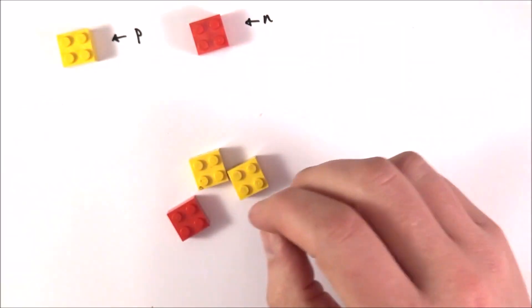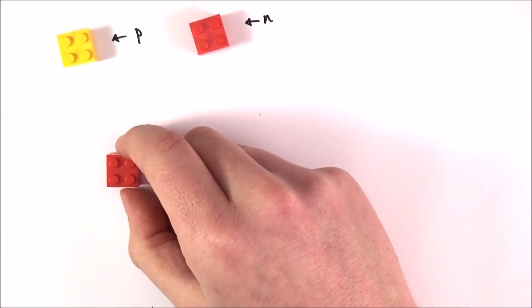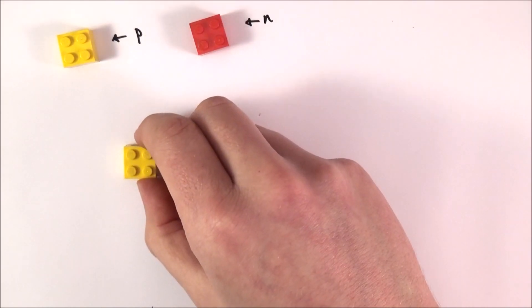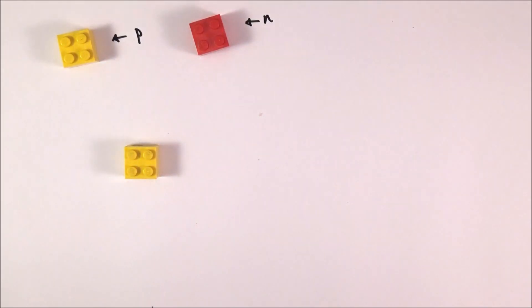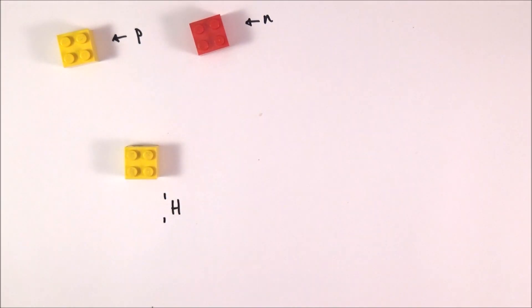Let's start with something very simple. If you have just one proton, this yellow one here, this is hydrogen. It has the symbol H and the numbers 1, 1.